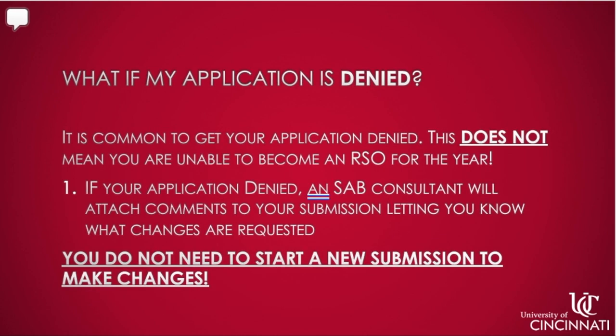What do you do if your application is denied? It's common to get your application denied — this does not mean that you are unable to become an RSO for the year. Instead, if your organization is denied, an SAB consultant will attach comments to your RESET submission to let you know what changes are requested. You'll get an email with all of these changes. Please note that you do not need to start a new submission to make changes.